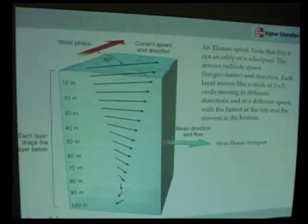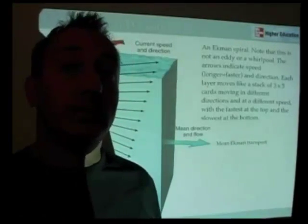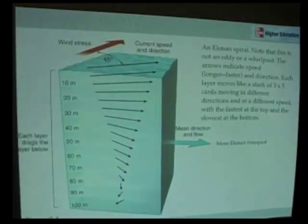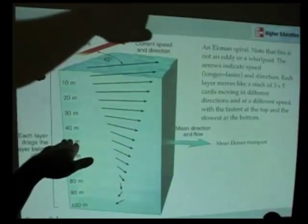What's most important about this explanation is that if we take an average of all these different directions, this going backwards, this going that way, and if we take an average of all the different speeds of the water moving in different directions, what we find is that the average direction and the average flow is about 90 degrees to the right of the wind.